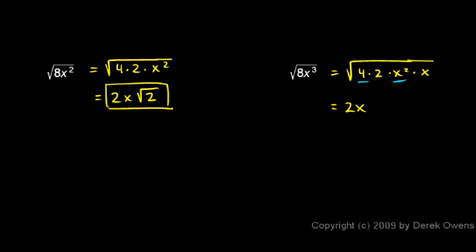And then what's left under the radical is a 2 and x. So I need to keep those under the radical. So I have 2x times the square root of 2x.